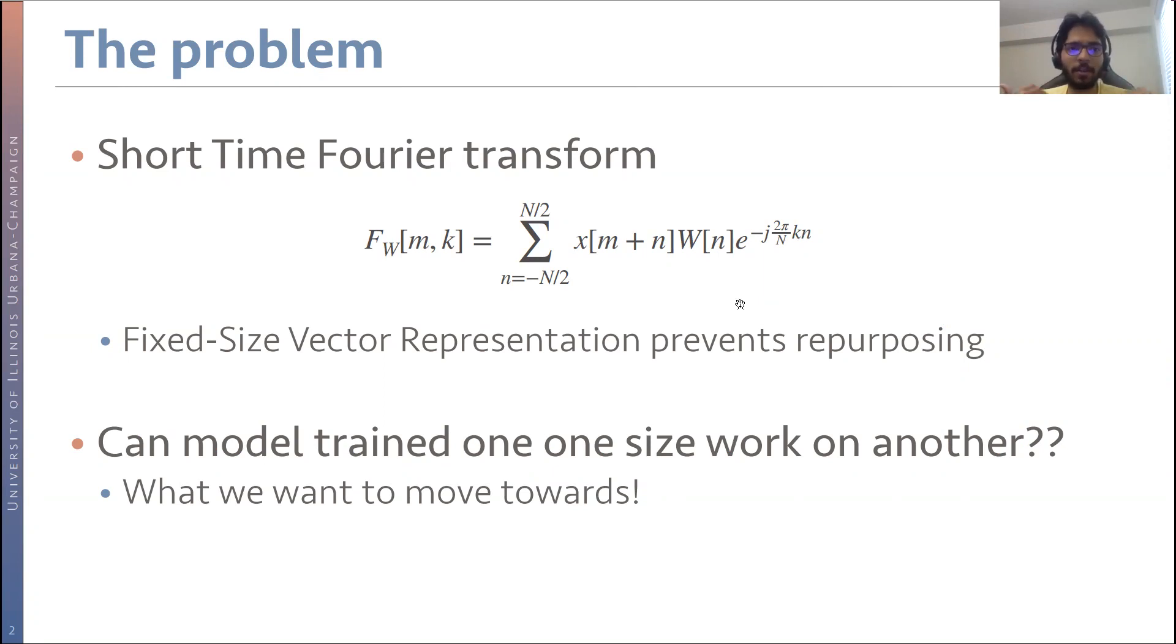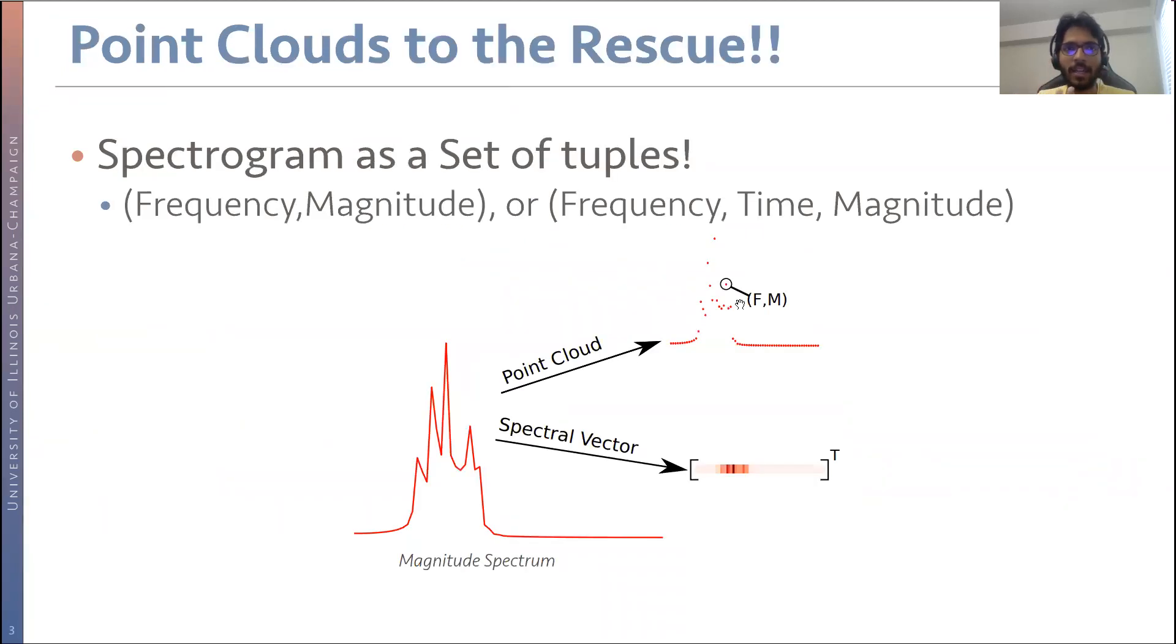So for example, if I were to ask the question, can a model that has been trained on one set of parameters, so let's say one set of window length and hop size, can this model be repurposed to work with data that has been obtained with another set of parameters? So this is the question we want to answer and the idea behind that is to treat our spectrogram as a set of tuples or we borrow the term from computer vision literature, a point cloud, a collection of points.